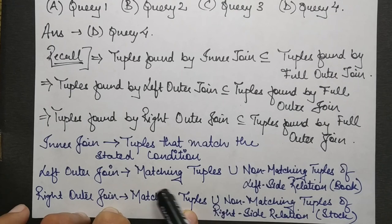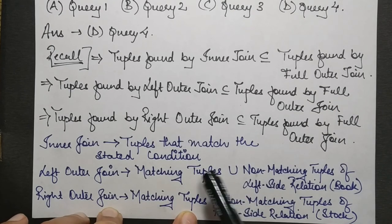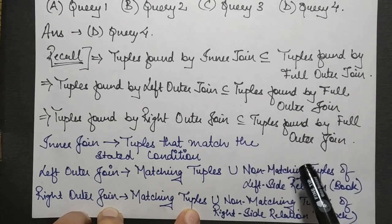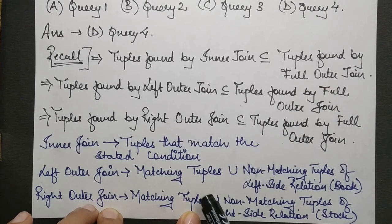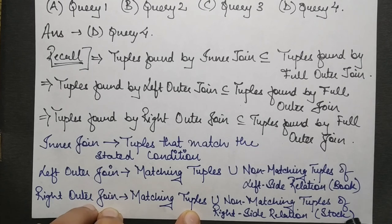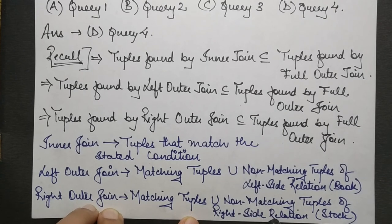Very simply, you can just analyze that obviously the full outer join is the superset of all these three because it is containing the sum of all the three outputs.